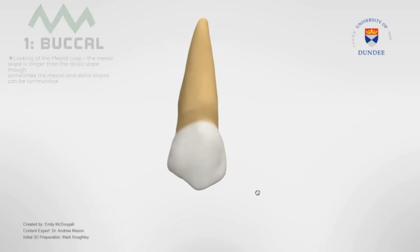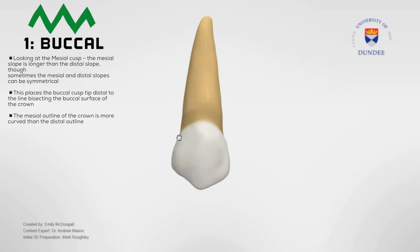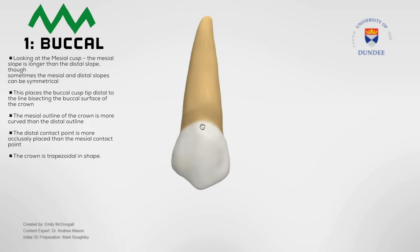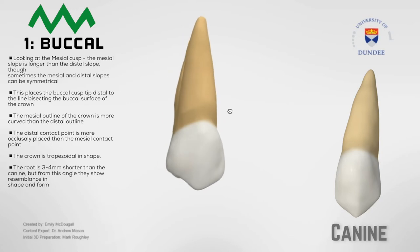From the buccal view, looking at the mesial cusp, the mesial slope is longer than the distal slope, though sometimes the mesial and distal slopes can be symmetrical. This places the buccal cusp tip distal to the line bisecting the buccal surface of the crown. The mesial outline of the crown is more curved than the distal outline, and the distal contact point is more occlusally placed than the mesial contact point. The crown is trapezoidal in shape. The root is three to four millimeters shorter than the canine but from this angle they show resemblance in shape and form.